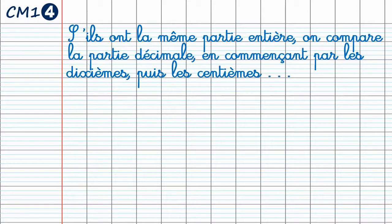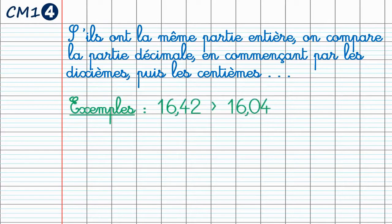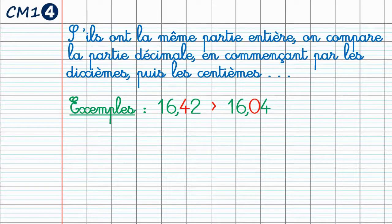Si deux nombres décimaux ont la même partie entière, on va donc comparer la partie décimale, en commençant par les dixièmes, puis les centièmes, etc. Comparons ces deux nombres décimaux : 16,42 et 16,04. Dans les deux nombres, la partie entière est 16, elle est donc identique. Nous allons donc comparer les dixièmes. Dans le premier nombre, il y a 4 dixièmes ; dans le second, il y a 0 dixièmes. 4 étant plus grand que 0, je peux maintenant dire que 16,42 est bien plus grand que 16,04.